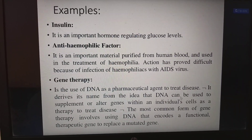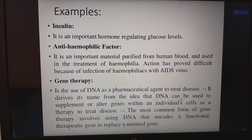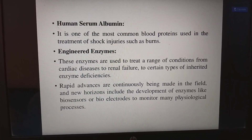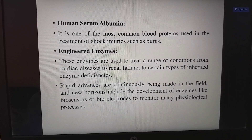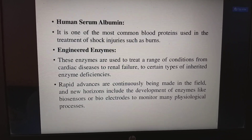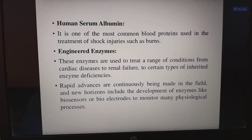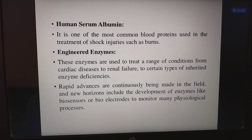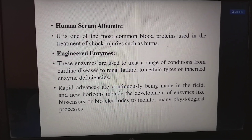The most common form of gene therapy involves using DNA that encodes a functional therapeutic gene to replace a mutated gene. Human serum albumin is one of the most common blood proteins, used in treatment of shock injuries such as burns. Engineered enzymes are used to treat conditions from cardiac disease to renal failure and inherited enzyme deficiencies. Rapid advances include the development of biosensors and bioelectrodes to monitor many physiological processes.